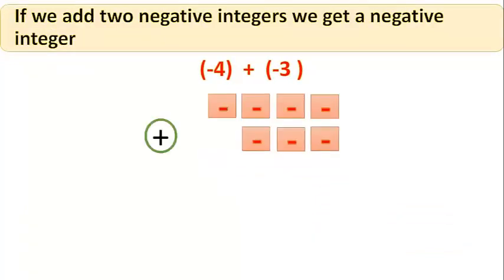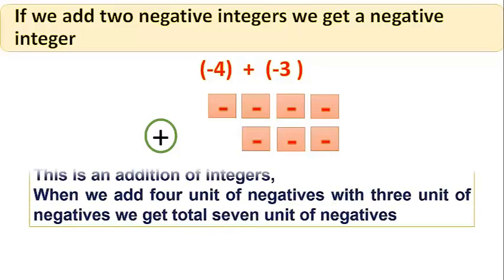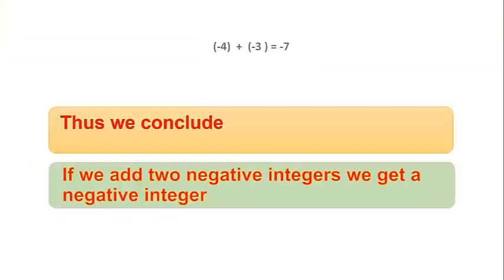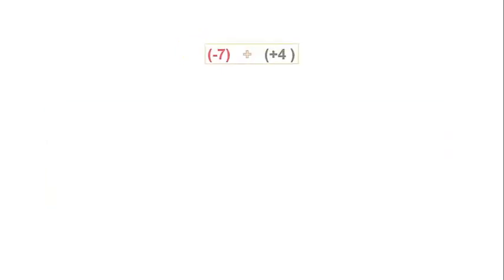So plus 7 plus plus 4 is equal to plus 11. If we add two negative integers, we get a negative integer. Let us consider 4 negatives and 3 negatives. 4 negative symbols are placed and 3 negative symbols are placed. Adding all the symbols, we get 7 negative symbols. When we add 4 units of negatives with 3 units of negatives, we get a total of 7 units of negatives. Thus we conclude, if we add two negative integers, we get a negative integer.